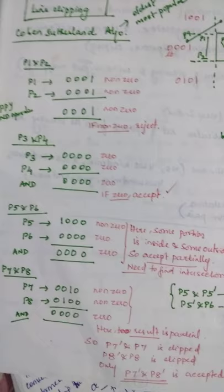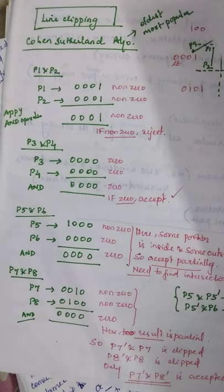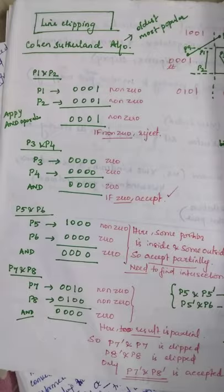Now let us see about line clipping alone. Line clipping has three different algorithms: the Cohen-Sutherland algorithm, the Liang-Barsky algorithm, and the Nicholl-Lee-Nicholl algorithm. Let us see a comparative study about these three algorithms.